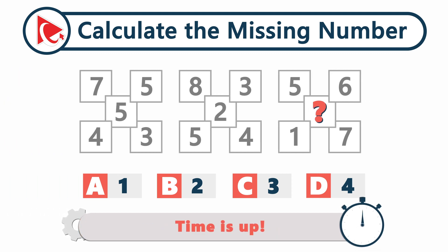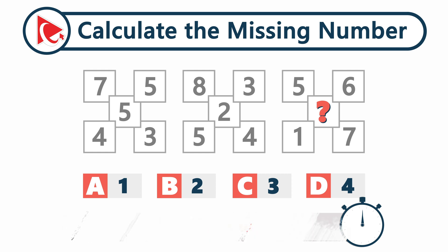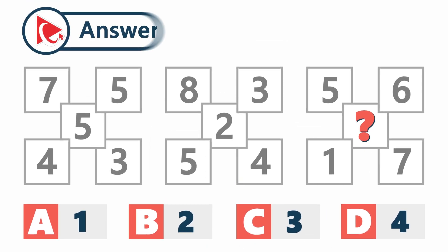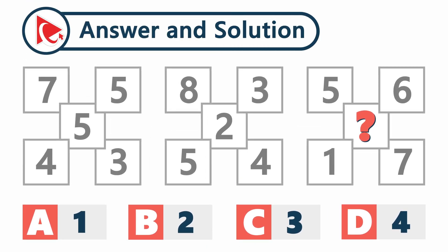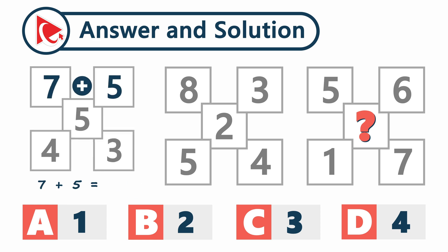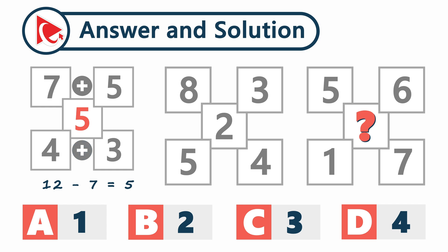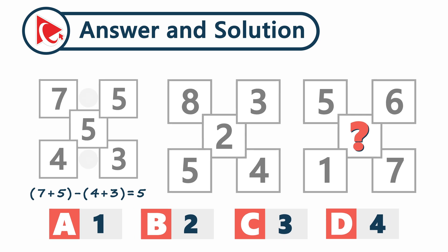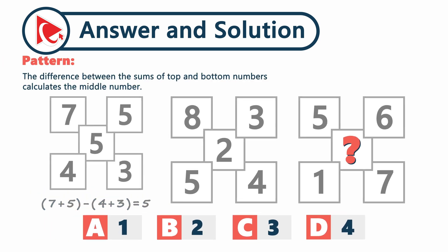Time's up. The pattern here is really simple. Let's take a close look at the first shape: seven plus five equals twelve, and four plus three equals seven; twelve minus seven equals five. This is how the number in the middle was calculated. The pattern is that the difference between the sum of the top and bottom numbers calculates the middle number.